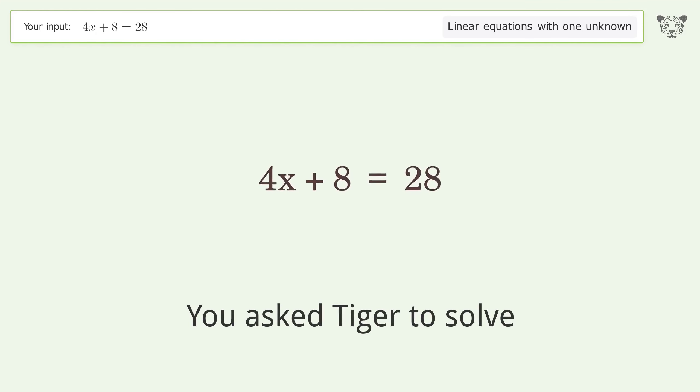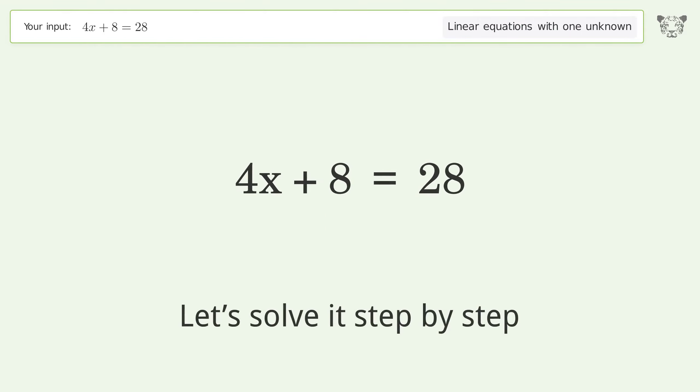You asked Tiger to solve. This deals with linear equations with one unknown. The final result is x equals 5. Let's solve it step by step.